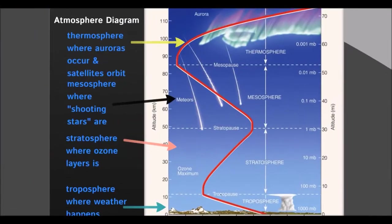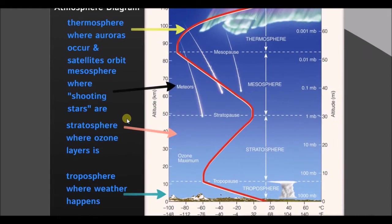In this diagram — which is actually in your notes — we're going to add in some things. There are only a few things we need to know about the atmospheric layers. The thermosphere is where auroras occur — the northern lights, or the southern lights if you're in the southern hemisphere — and it's also where satellites orbit. Most satellites don't orbit in space; they orbit inside our own atmosphere. The International Space Station orbits right at the mesopause, between the thermosphere and the mesosphere.